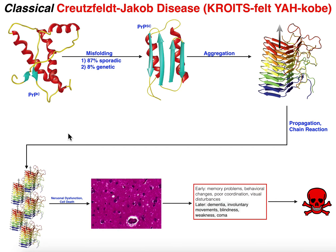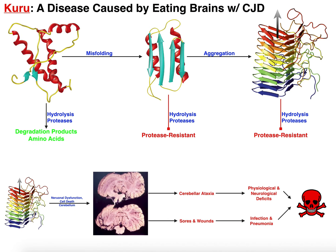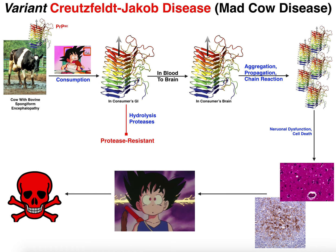In this playlist, we're going to be discussing the various prion diseases. We'll start with classical Creutzfeldt-Jakob disease, also called CJD. In the next two videos, we're going to follow this up with variations of CJD. The first is Kuru, which is caused by eating the brains of those affected with CJD. And then after that, we'll talk about variant Creutzfeldt-Jakob disease, which is the human form of mad cow disease.